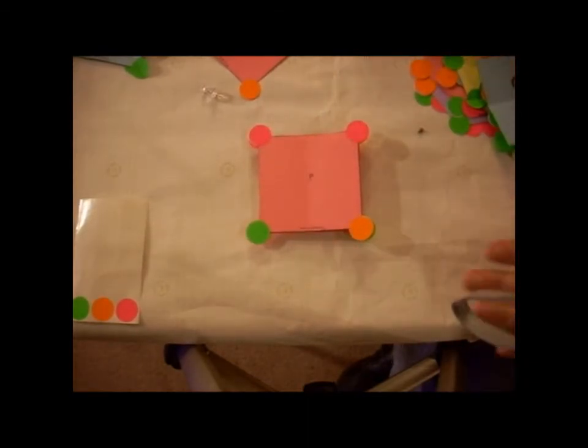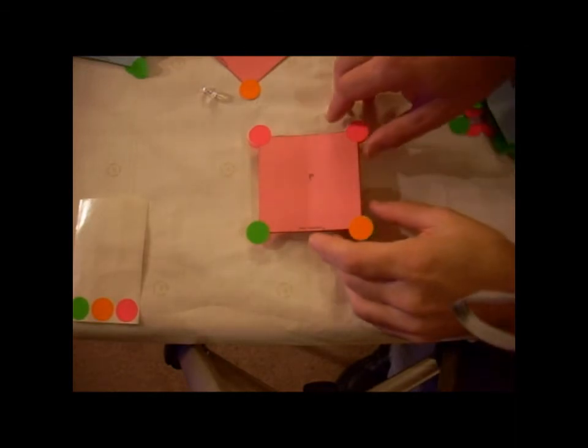Now remember, it has to have at least two symmetry operations because it's planar. Because it's planar, it's going to have a mirror plane, and every molecule, no matter how crazy it looks, always has the identity operation. So it always has E. So in this case, we have two symmetry operations.